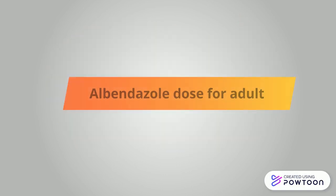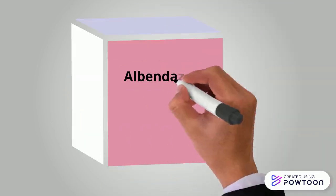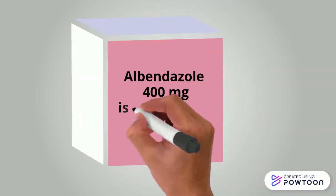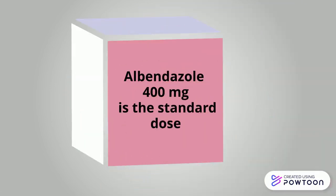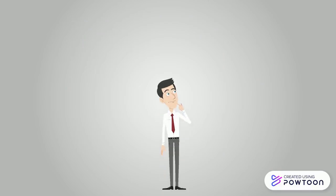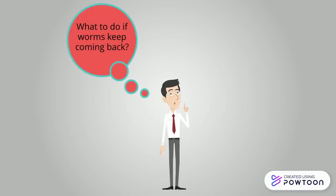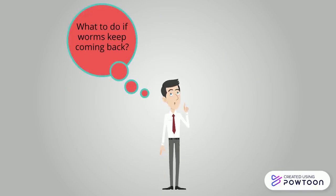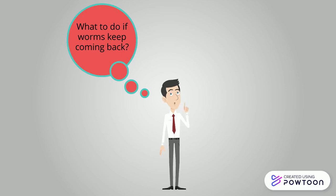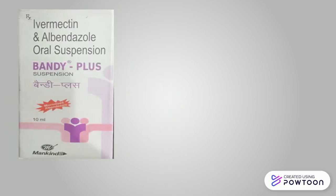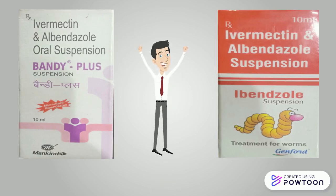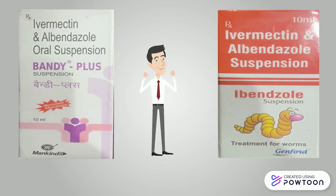Albendazole dose for adults: Albendazole 400mg is the standard dose and a single dose is quite enough for deworming. But if worms are not being treated by Albendazole even after a second dose, in that case, Ivermectin and Albendazole combination is a perfect choice.